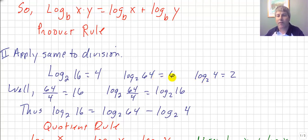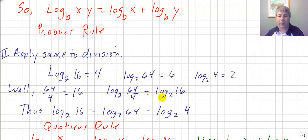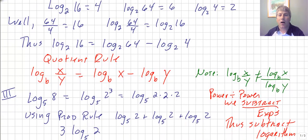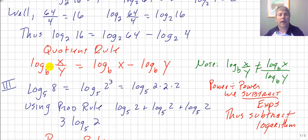64 divided by 4 is 16, and 6 minus 2 is 4. That leads us to our quotient rule: log base 2 of 64 divided by 4 is equivalent to log base 2 of 64 minus log base 2 of 4. A power divided by a power — we subtract our exponents or we subtract our logarithms. So our quotient rule says: log base b of x divided by y equals log base b of x minus log base b of y. We subtract the logarithm of the denominator from the logarithm of the numerator.